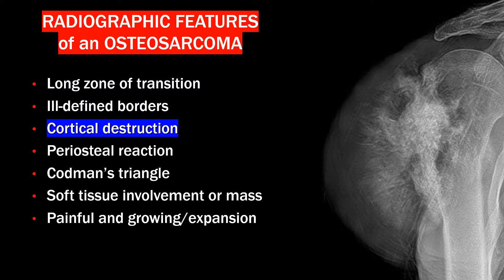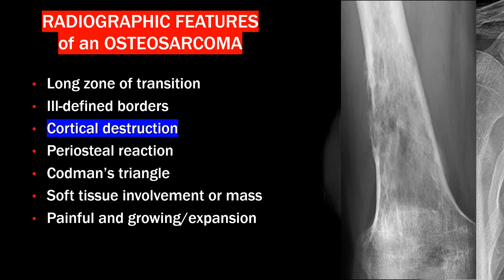Cortical destruction of bone refers to the loss or breakdown of the outer layer of the bone known as the cortex. This finding is significant because it often indicates an underlying pathological process.